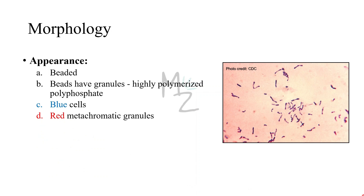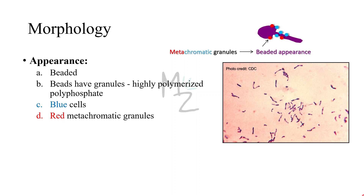The beads consist of granules of highly polymerized phosphate — a storage mechanism for high-energy phosphate bonds. The granules stain metachromatically: a dye that stains the rest of the cells blue will stain the granules red. As you can see there, this is the club-shaped bacterium — the rest of the cells are blue but the granules are red-colored, stained metachromatically.